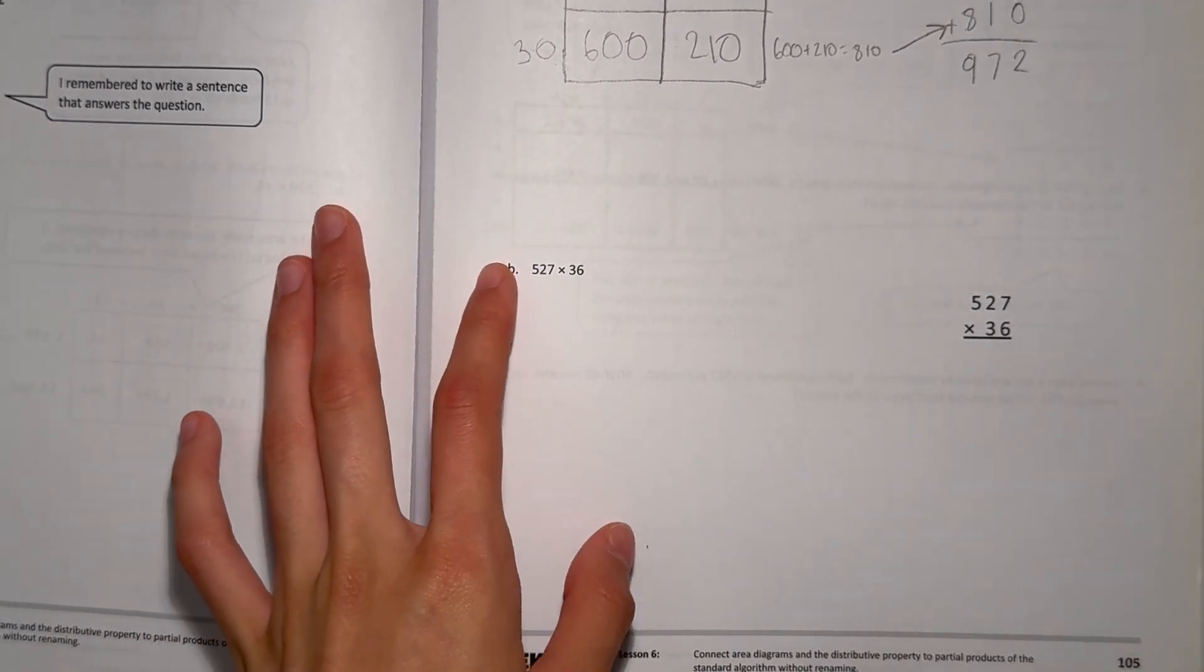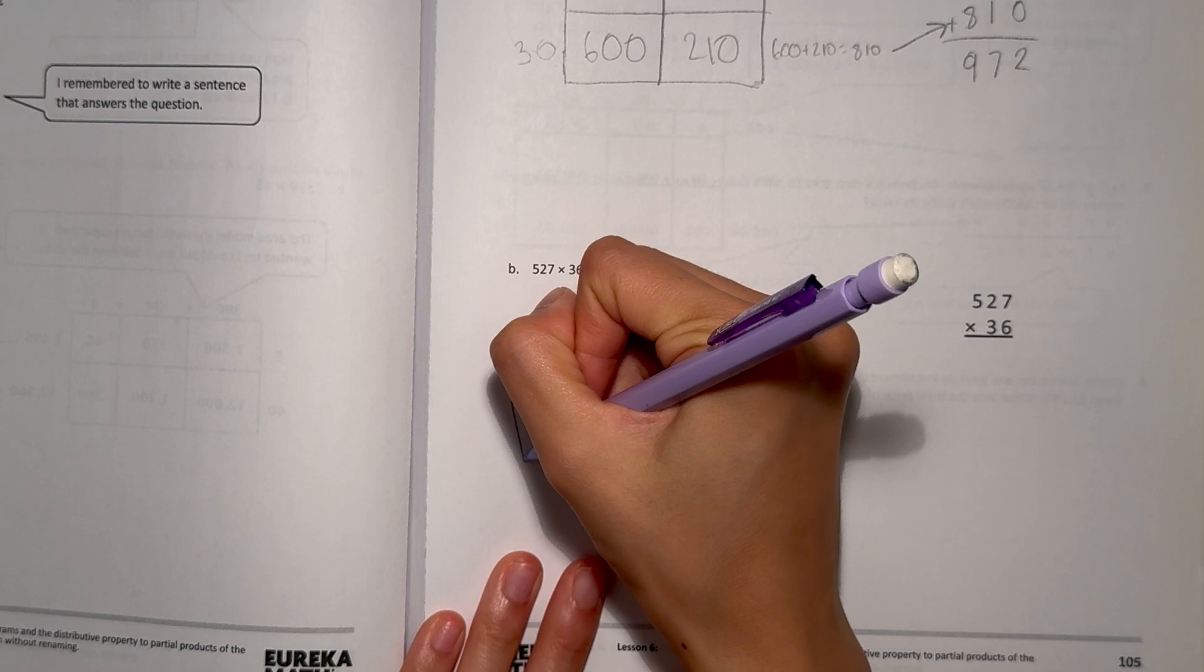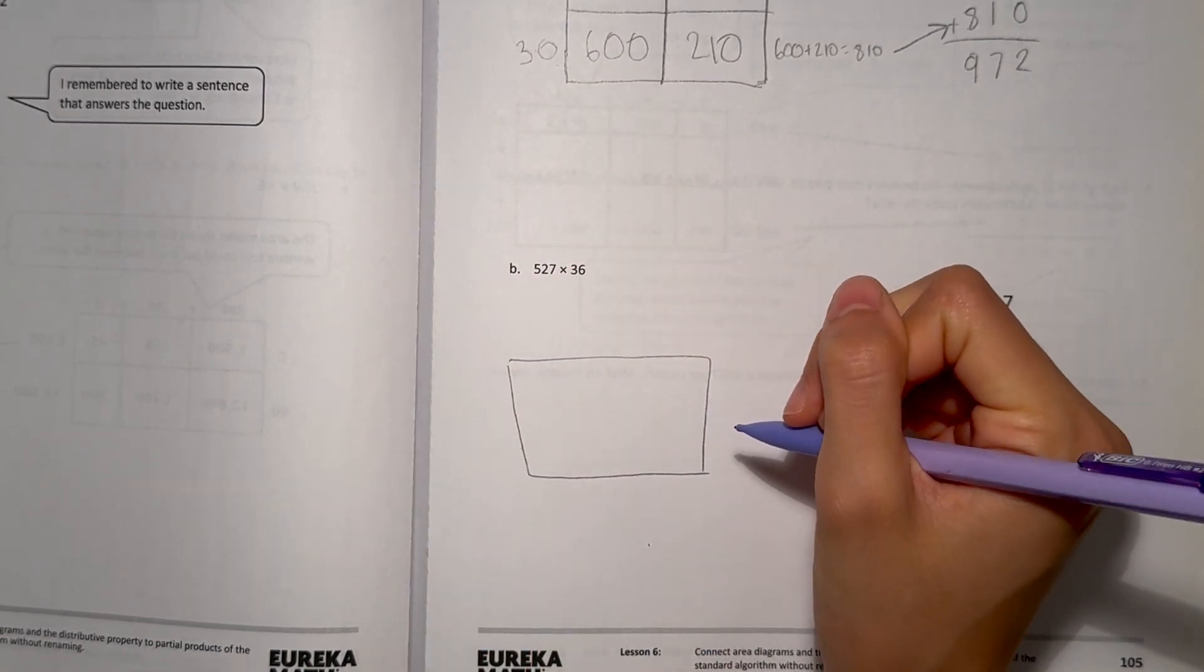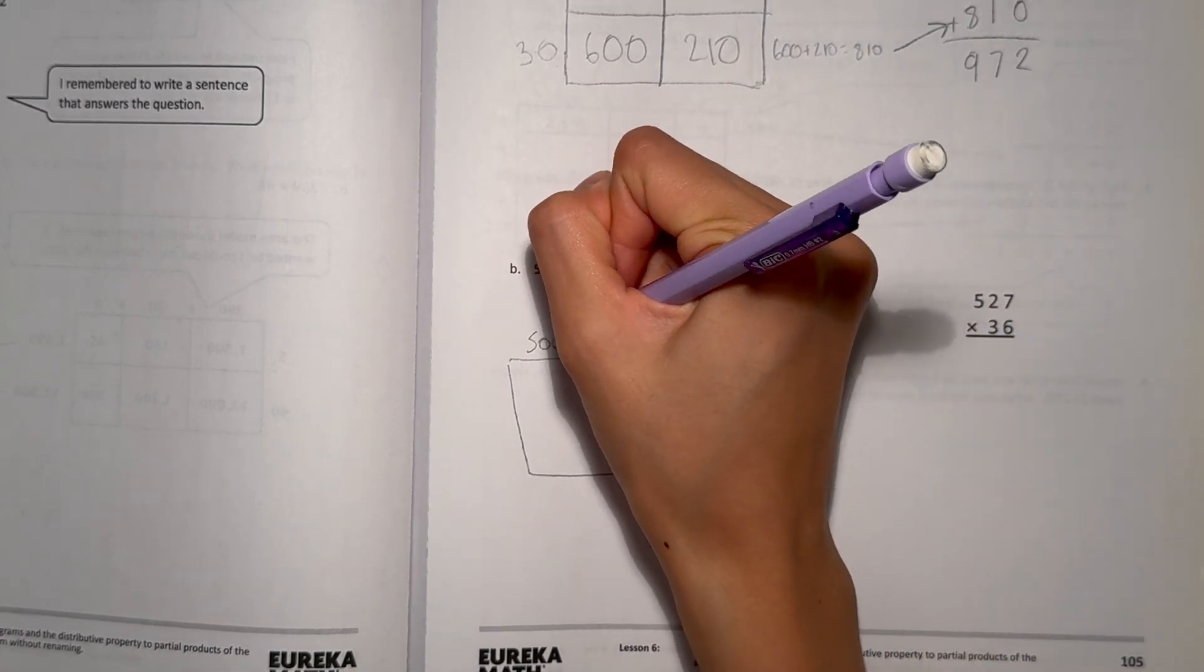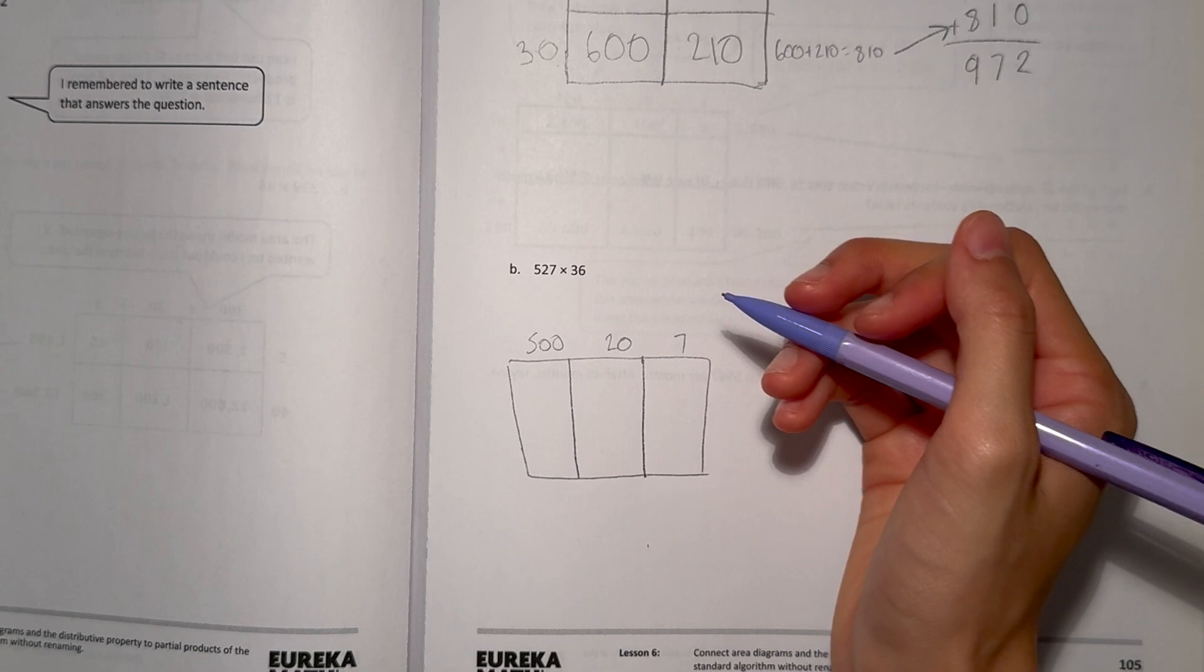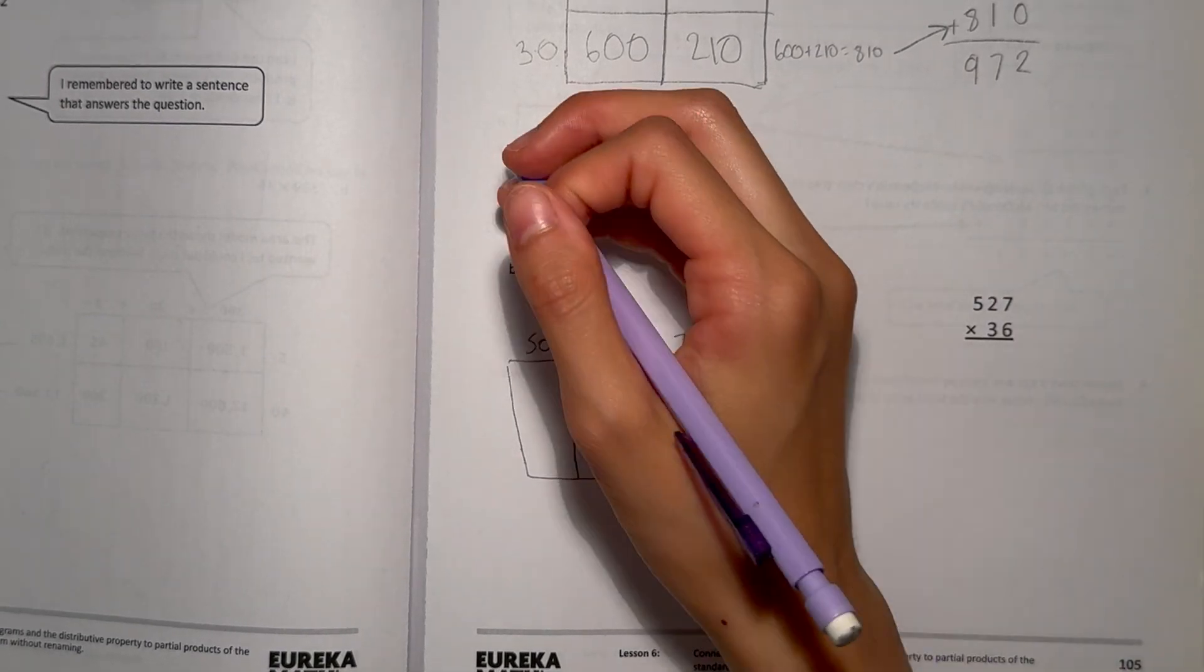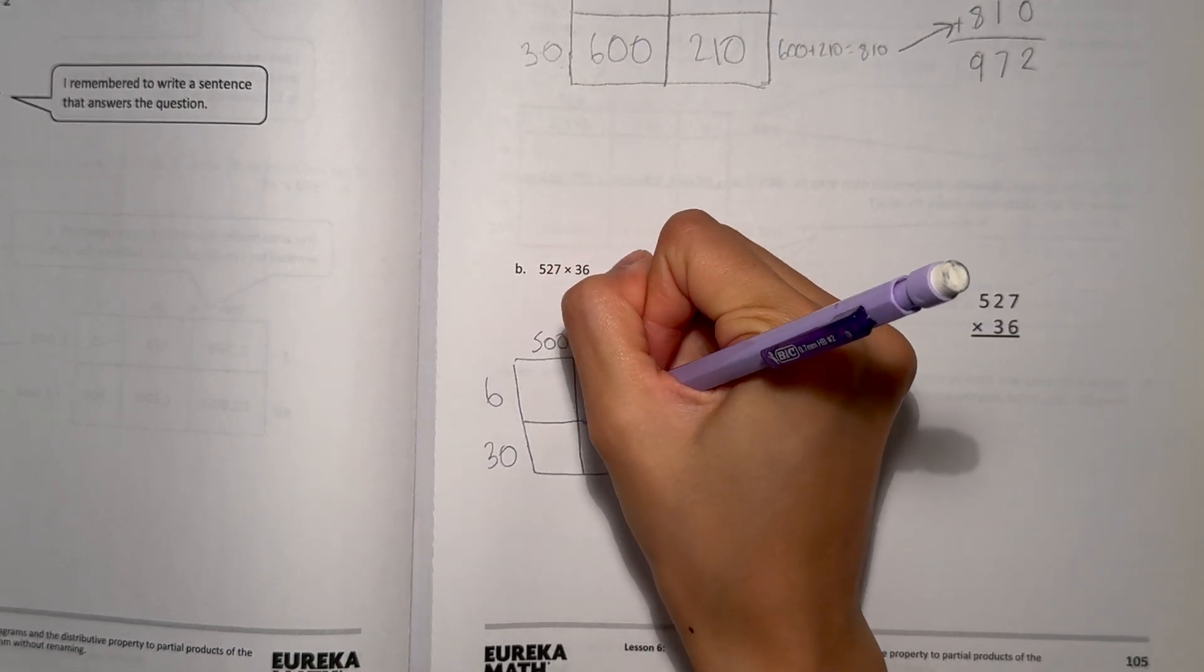Alright, let's look at B now. We have 527 times 36. Let's make our area model. 527. That would look like 500 plus 20 plus 7. We can split this into thirds because we have 527. That's 3 numbers. And then times 36. Remember 30 on the bottom, 6 on top. And we split it in half.